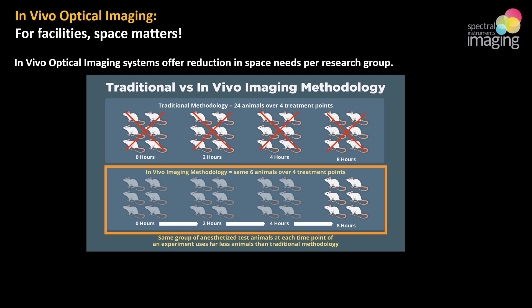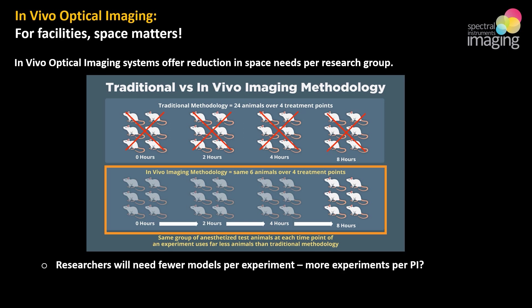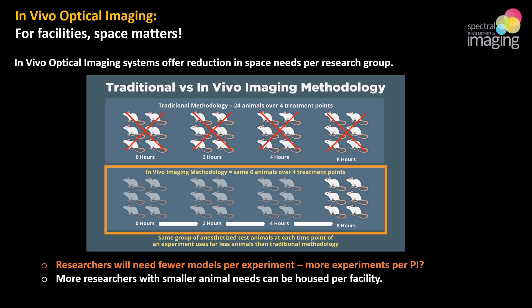What does this mean from a facility space perspective? Broadly, researchers may need fewer mice per experiment, which might open up a facility's ability to house a greater variety of experimental models per researcher. Alternatively, a facility might be able to offer space to a greater number of individual researchers — and both are advantageous.